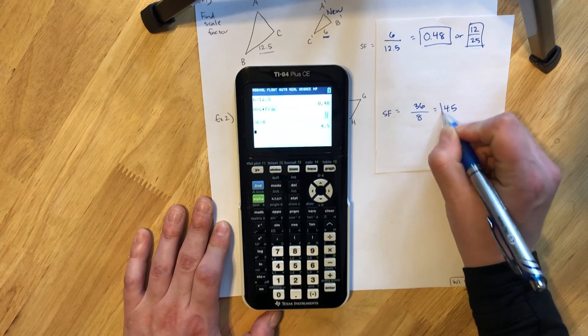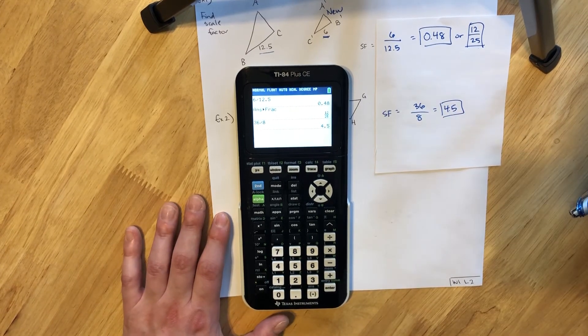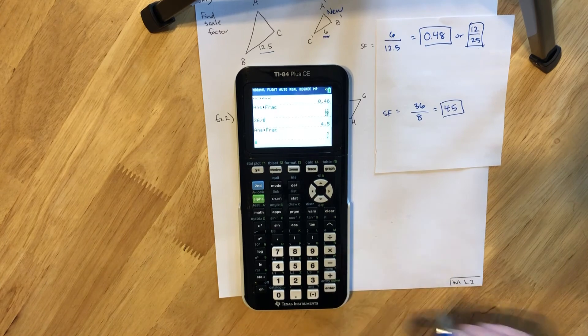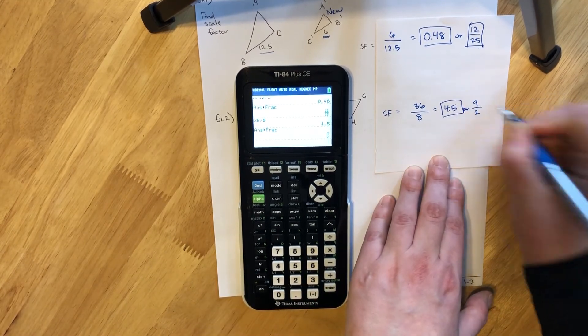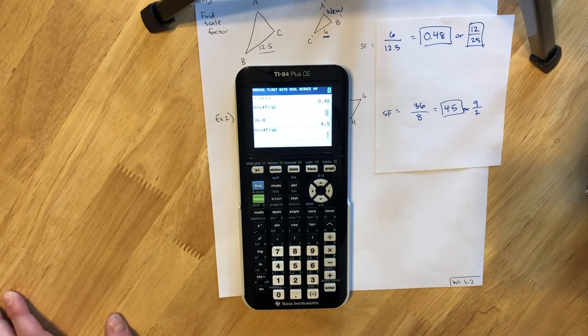And when we do that we get another decimal, we get 4.5, and again that's perfectly correct for the scale factor. But if you're wanting to convert that into a fraction form you could also write that as nine halves. One or the other is going to work great.